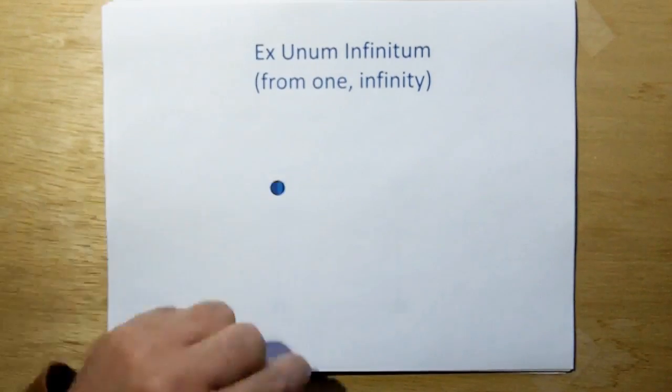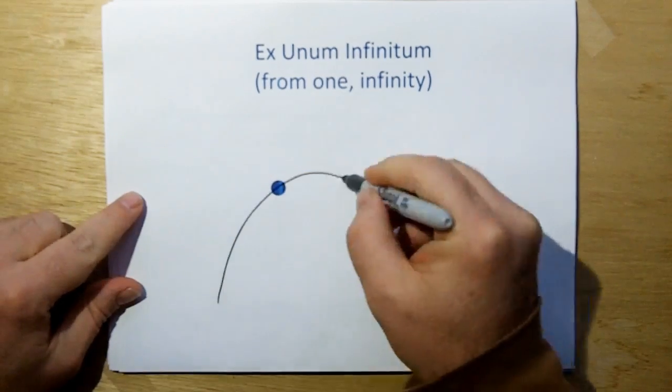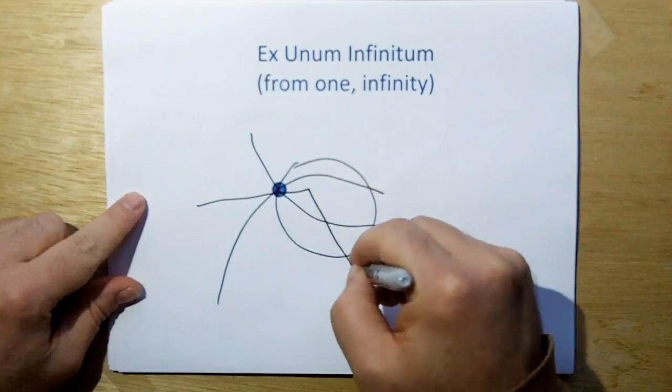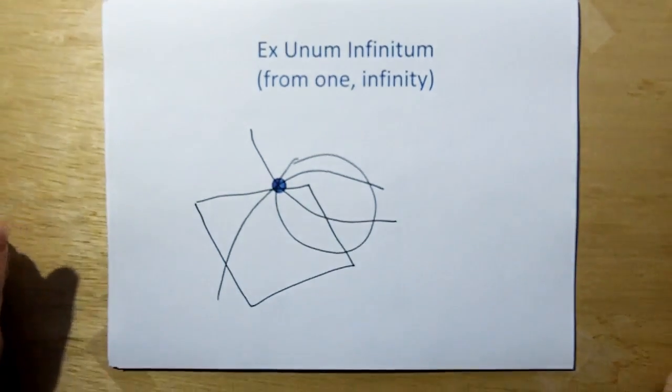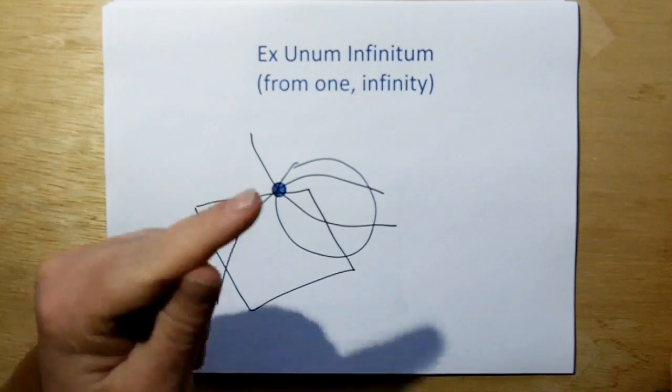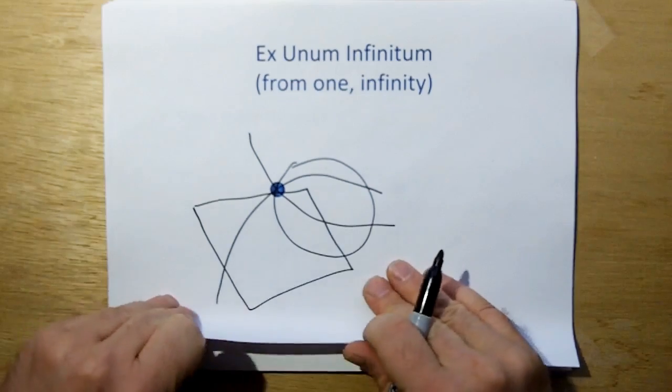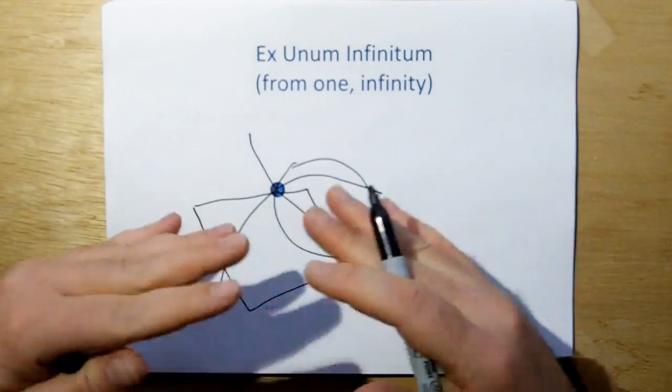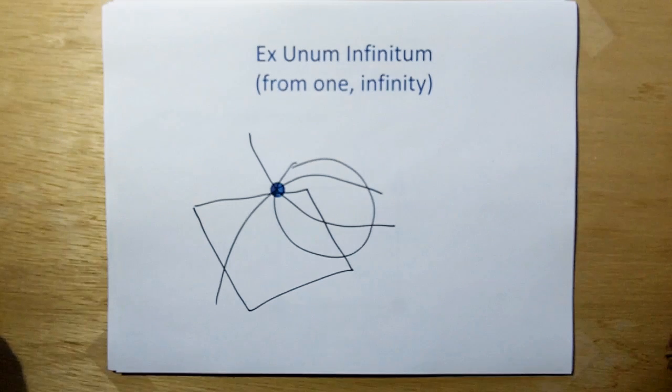If you only have one observation, there are infinite theories you can put through that observation. Infinite. Pick any shape, line, form, figure. There's infinite that can fit if you only have one observation. And therefore, if you only have one observation, you're going to have infinite theories that fit that observation.